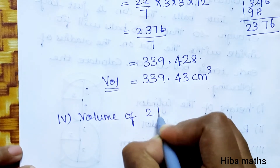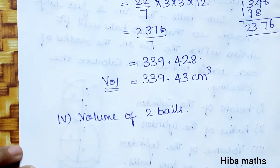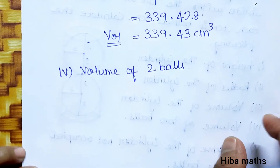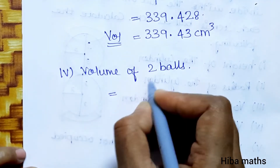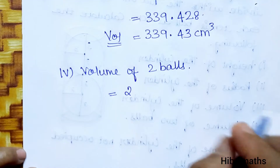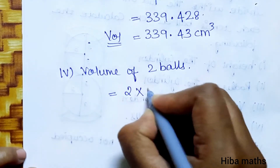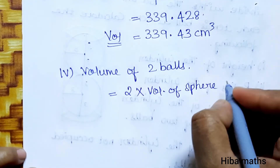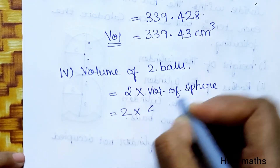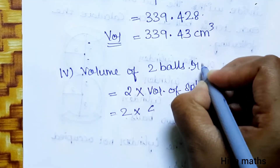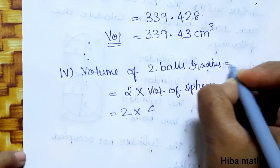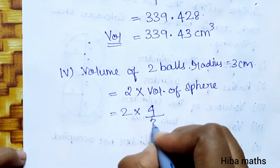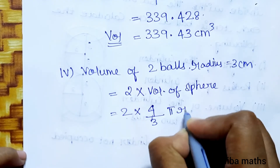Volume of 2 balls — the balls are spherical in shape. Volume of a sphere = (4/3)π r³. Since we have two balls, it is 2 × (4/3)π r³. Radius = 3 cm.